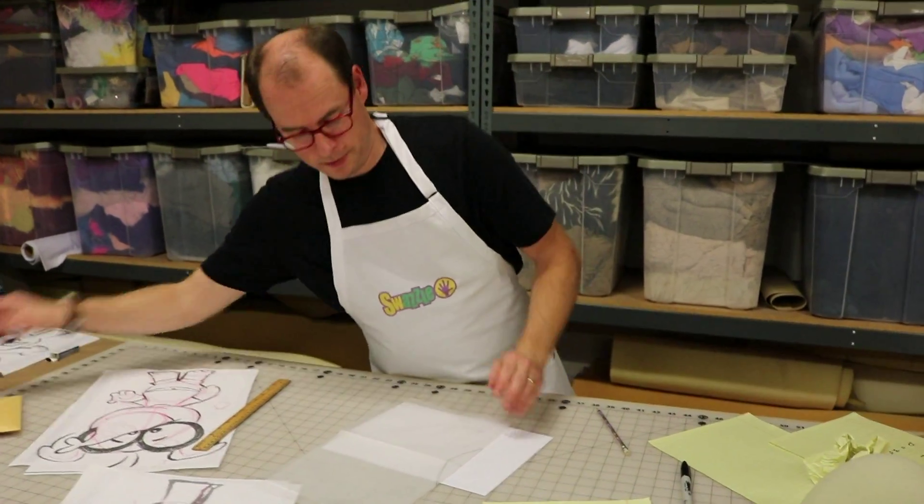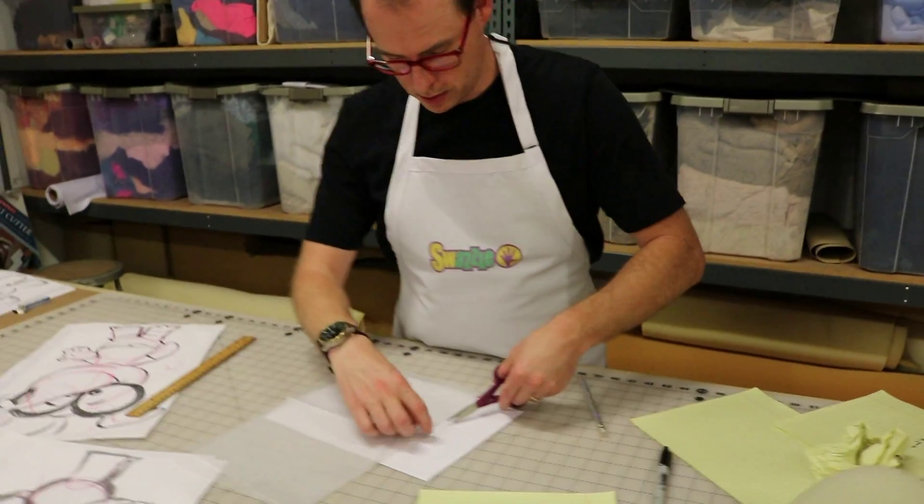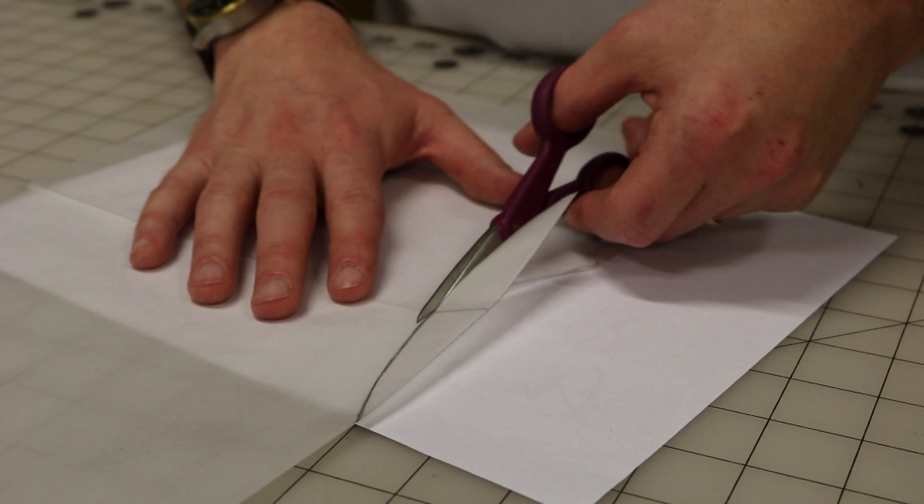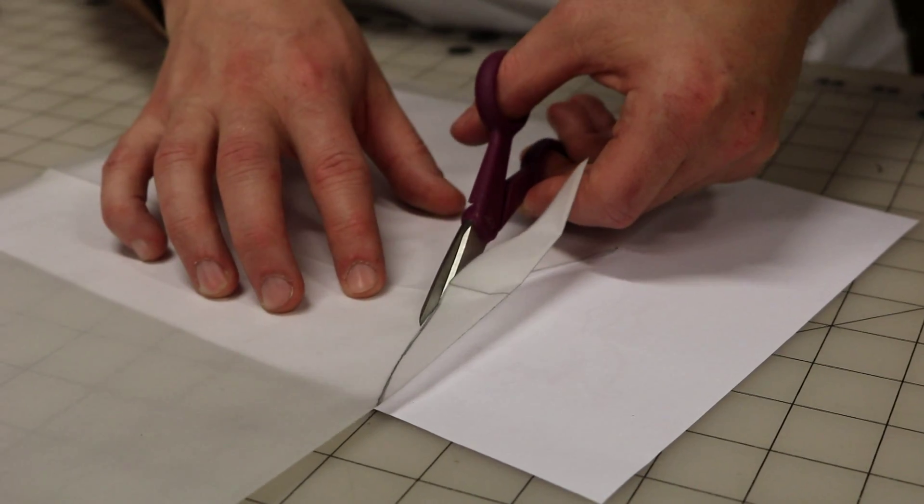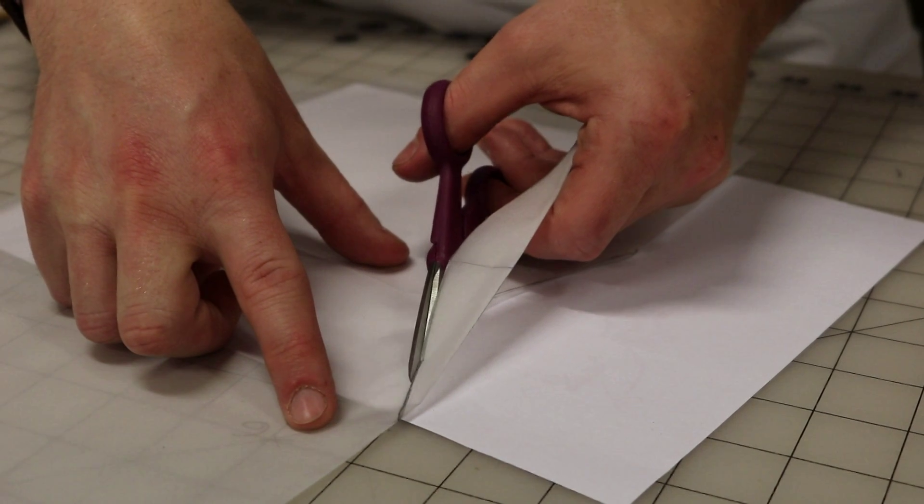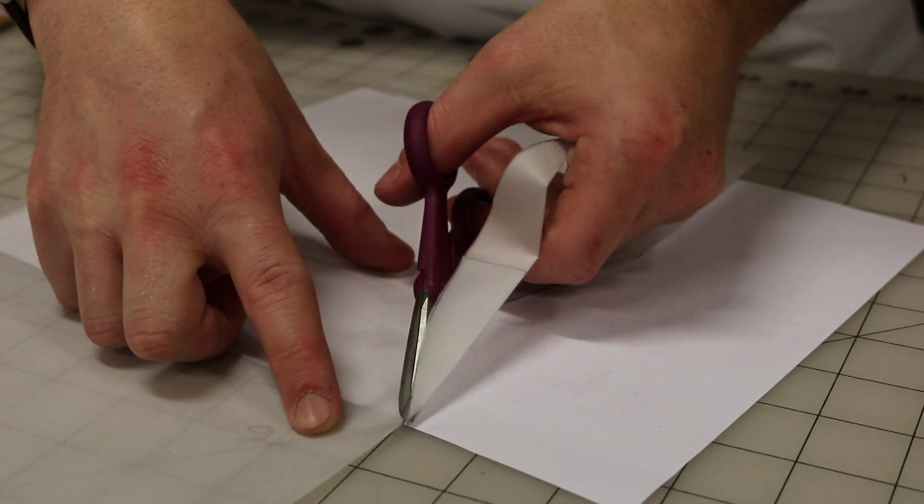Now we get scissors. Cut it out. And as I go I'm going to think about kind of rounding that line a little bit. Otherwise it could start looking like a, not a sphere. So now we have our petal shape. And when we take 6 of these we will be able to make a sphere.